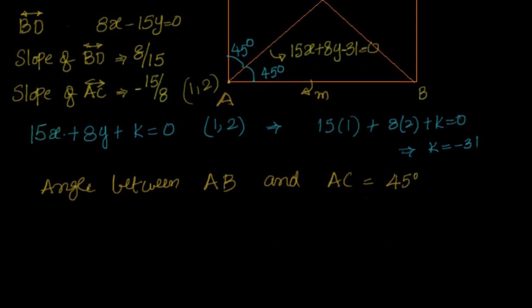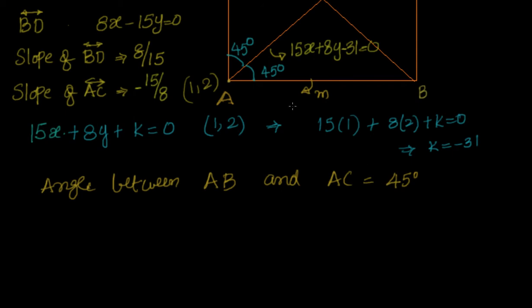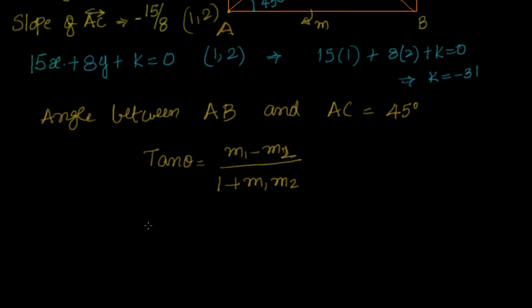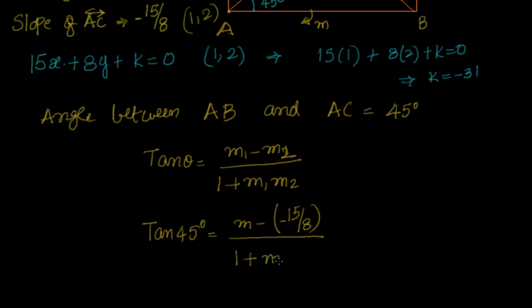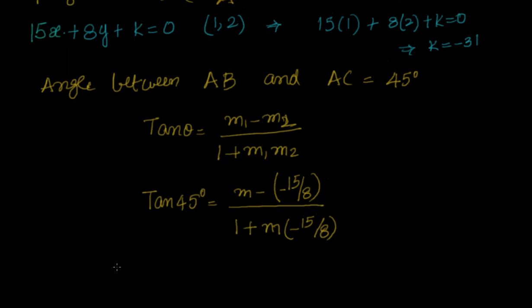Once we know the angle between AB and AC is theta, we use tan theta equal to (M1 minus M2) divided by (1 plus M1 M2). Substituting: tan 45 equal to (M minus of minus 15 by 8) divided by (1 plus M into minus 15 by 8).